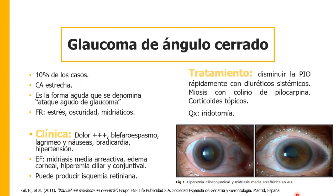El tratamiento es disminuir la presión intraocular rápidamente con diuréticos sistémicos. El manitol es un diurético osmótico que se utiliza de rescate. También se puede utilizar acetazolamida. Se usan corticoides tópicos para desinflamar y sacar al paciente de la crisis, aunque tienen riesgo. El tratamiento quirúrgico es la iridotomía, donde se abre un drenaje por una vía no clásica del humor acuoso, la vía uveoescleral.